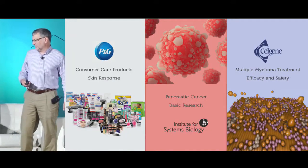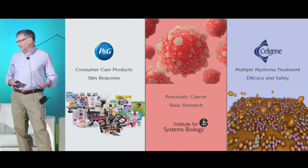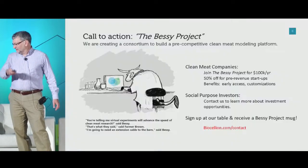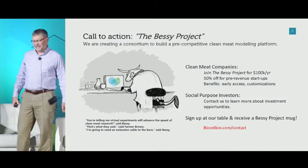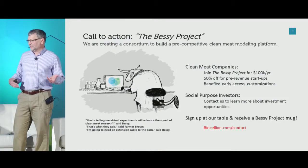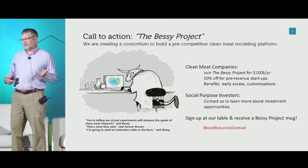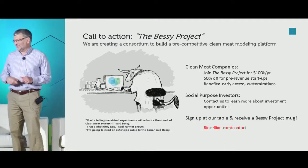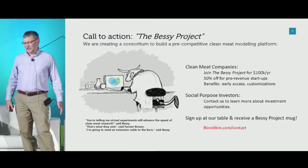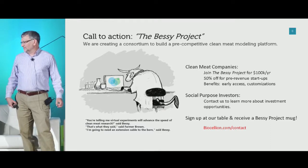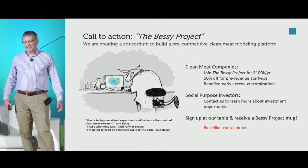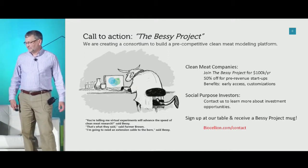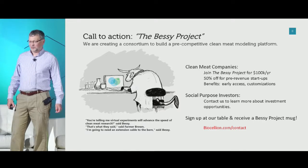We have three referenceable customers: Procter & Gamble, Super Systems Biology, and Cell Gene. Our call to action: we're creating a consortium to build a pre-competitive clean meat modeling platform — we're calling that the BESSI project. We're inviting clean meat companies to join and in exchange get early access to the platform we'll develop over the next few years. We're also looking for investors — please contact us if you're interested. And if you sign up at our table, you can receive a free BESSI project mug.